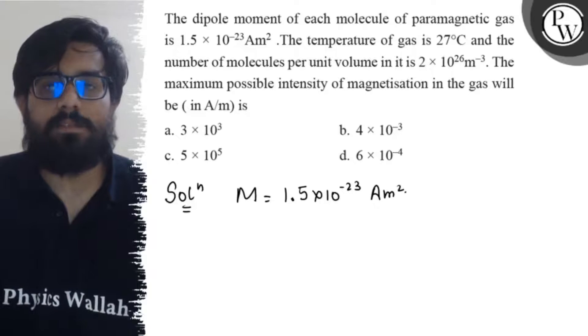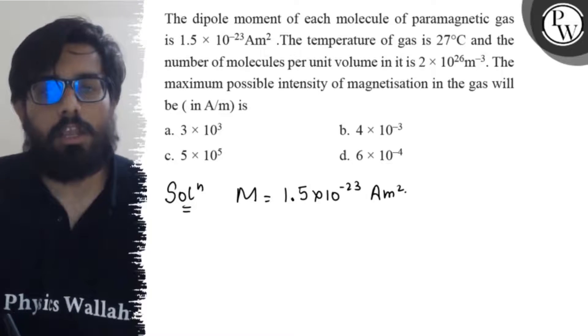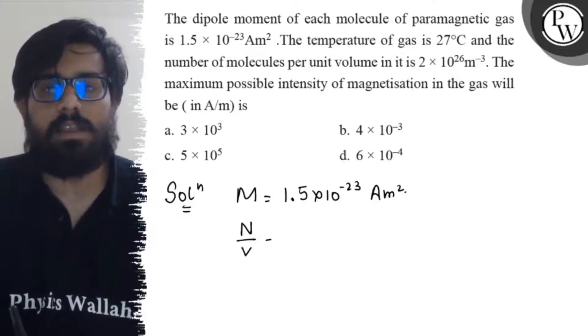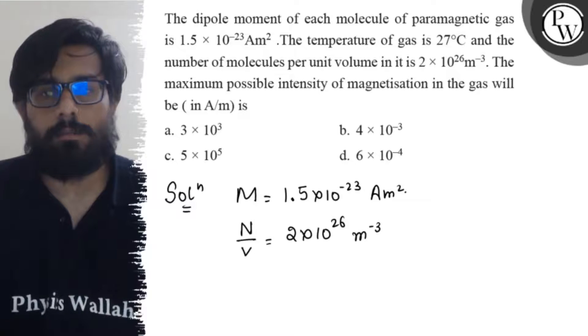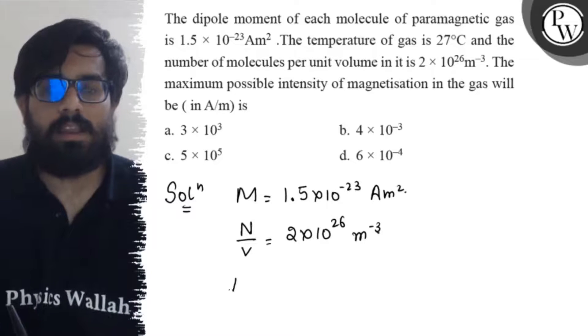The temperature of the gas is given as 27 degrees Celsius and the number of molecules per unit volume is given as 2 × 10^26 per meter cube. And I have to find the value of I.